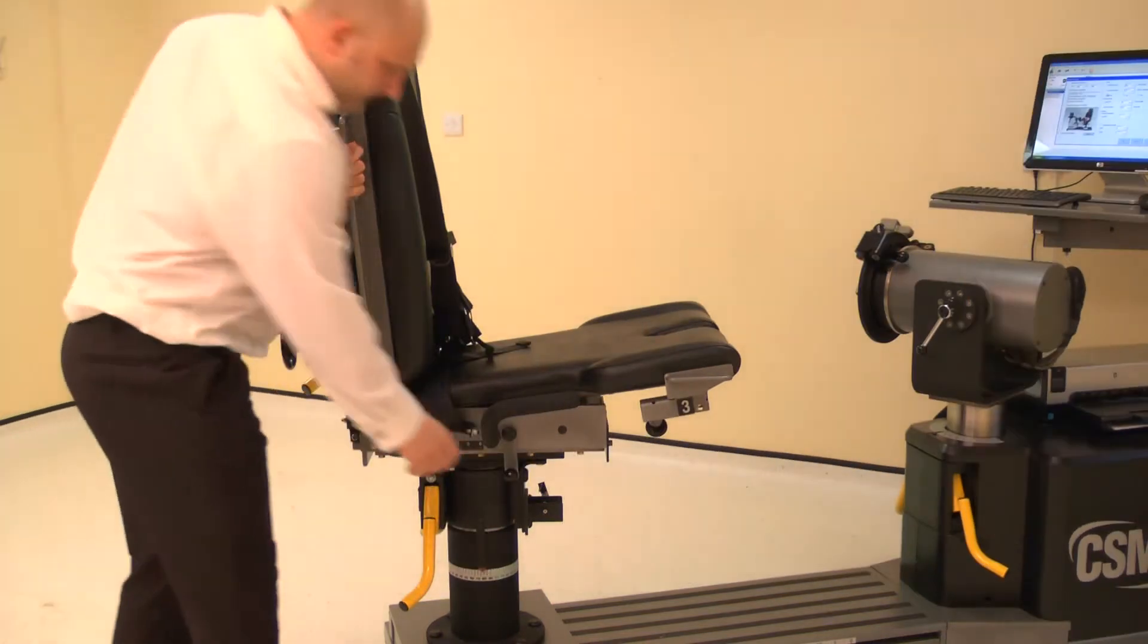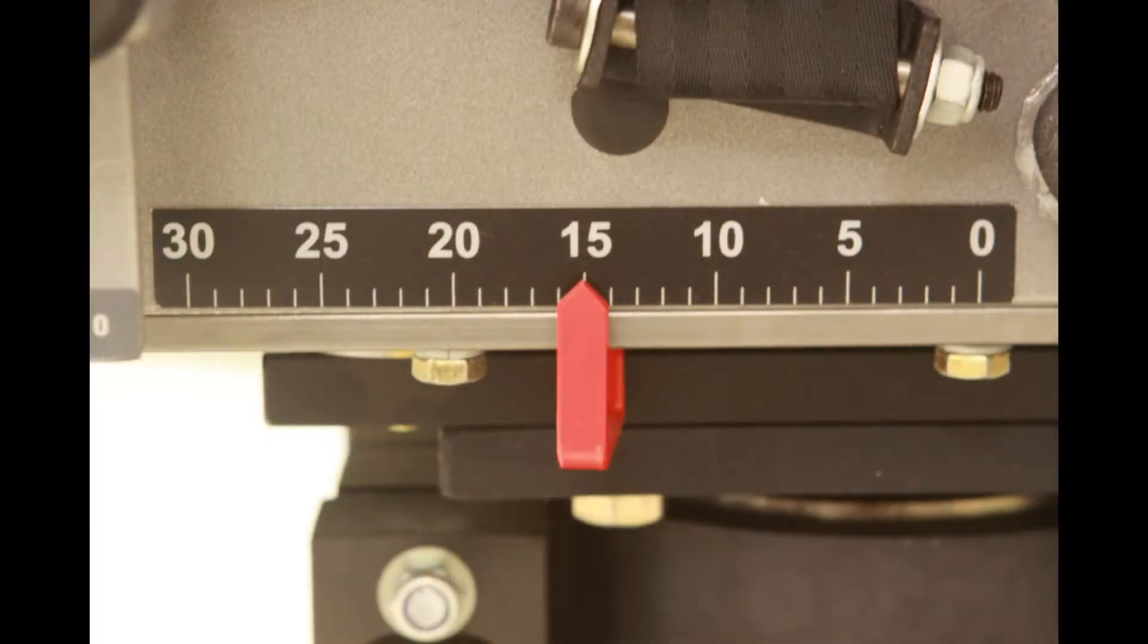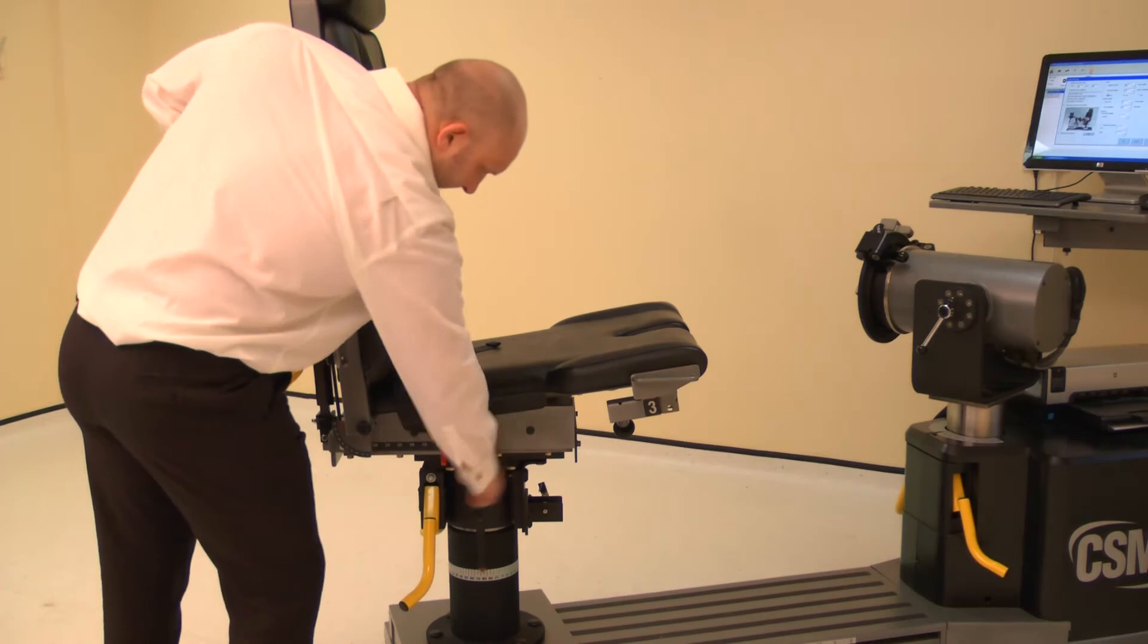The chair foreaft is altered by raising either locking handle. Then slide the chair bottom forwards or backwards. For the knee, adjust the chair foreaft to position 15. Lower the locking handle to secure.